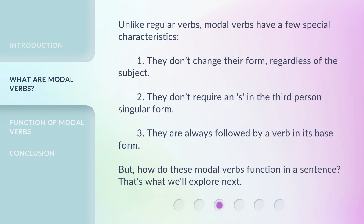Unlike regular verbs, modal verbs have a few special characteristics. 1. They don't change their form, regardless of the subject. 2. They don't require an S in the third person singular form. 3. They are always followed by a verb in its base form. But how do these modal verbs function in a sentence? That's what we'll explore next.